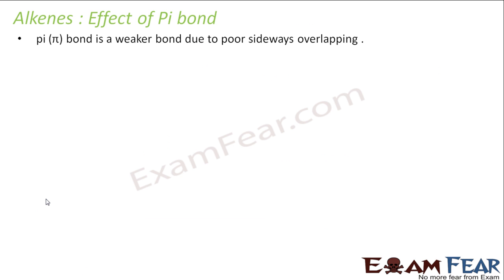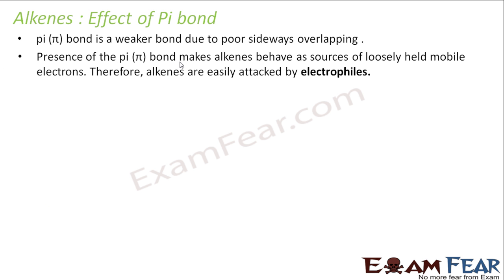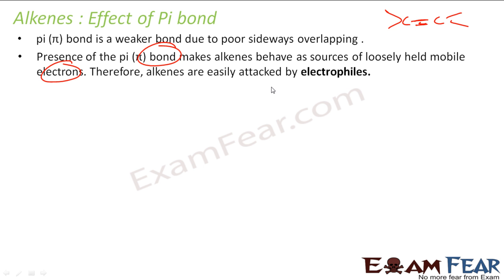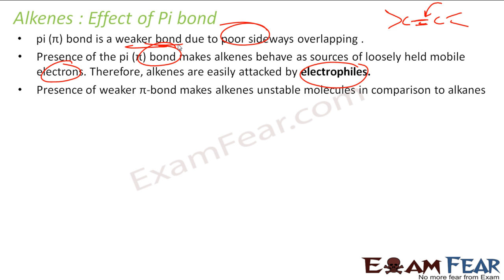There are pi bonds in this alkene. Pi bond is a weaker bond due to poor sideways overlap. Also, this pi bond has a lot of mobile electrons. So this is easily attacked by electrophiles because electrophiles love electrons. We have extra electrons roaming around, so they are vulnerable to attack. Sigma bonds are not broken because sigma bonds are stronger bonds and pi bonds are weaker bonds.